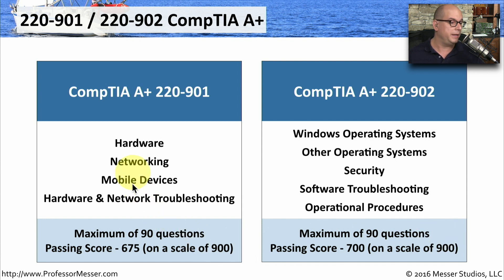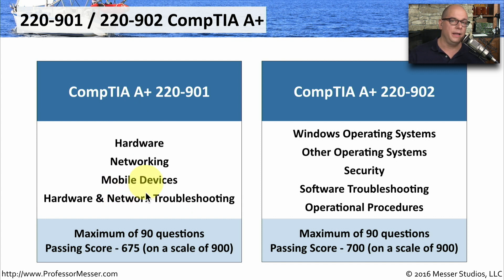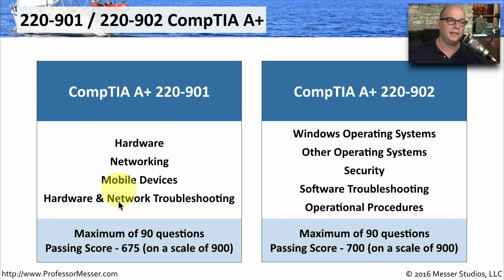For example, in the 901, you still need to know hardware, networking, and mobile devices. But troubleshooting has been moved from the 902 exam — hardware, network, and mobile device troubleshooting are now part of the 901 exam. So instead of learning information on the 901 that you'd then troubleshoot on the 902, the 901 is a completely self-contained exam. You can simply study the information, pass this exam, and then study a completely different group of information for the 902.